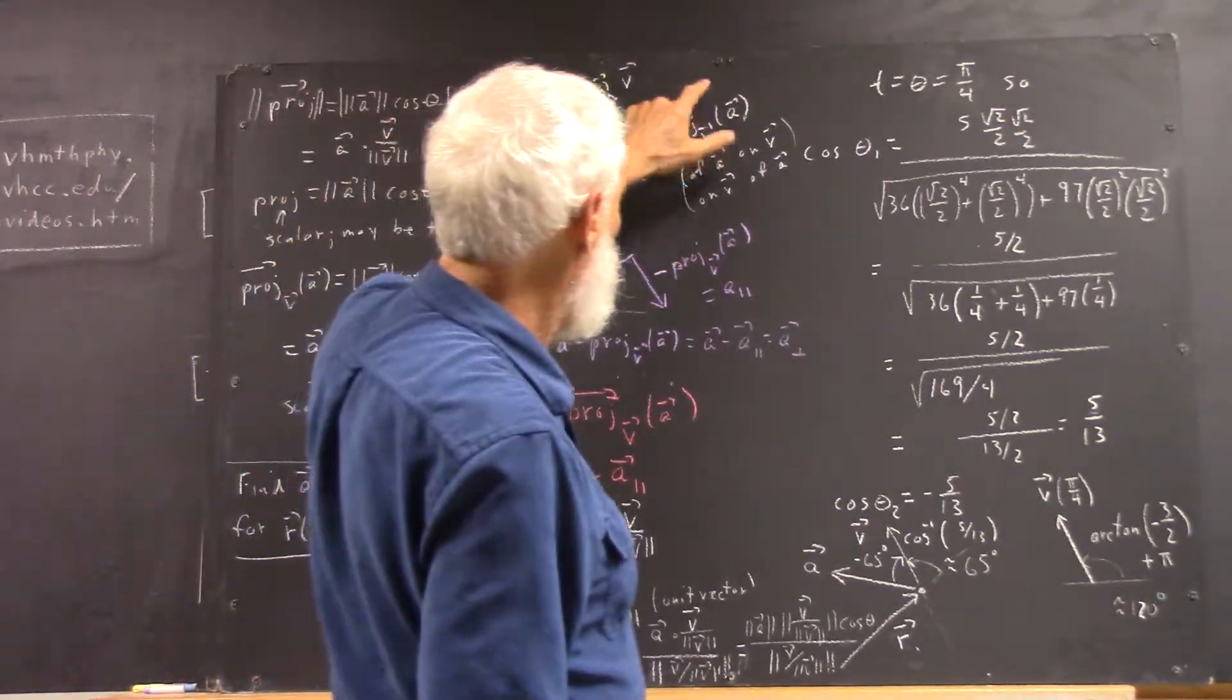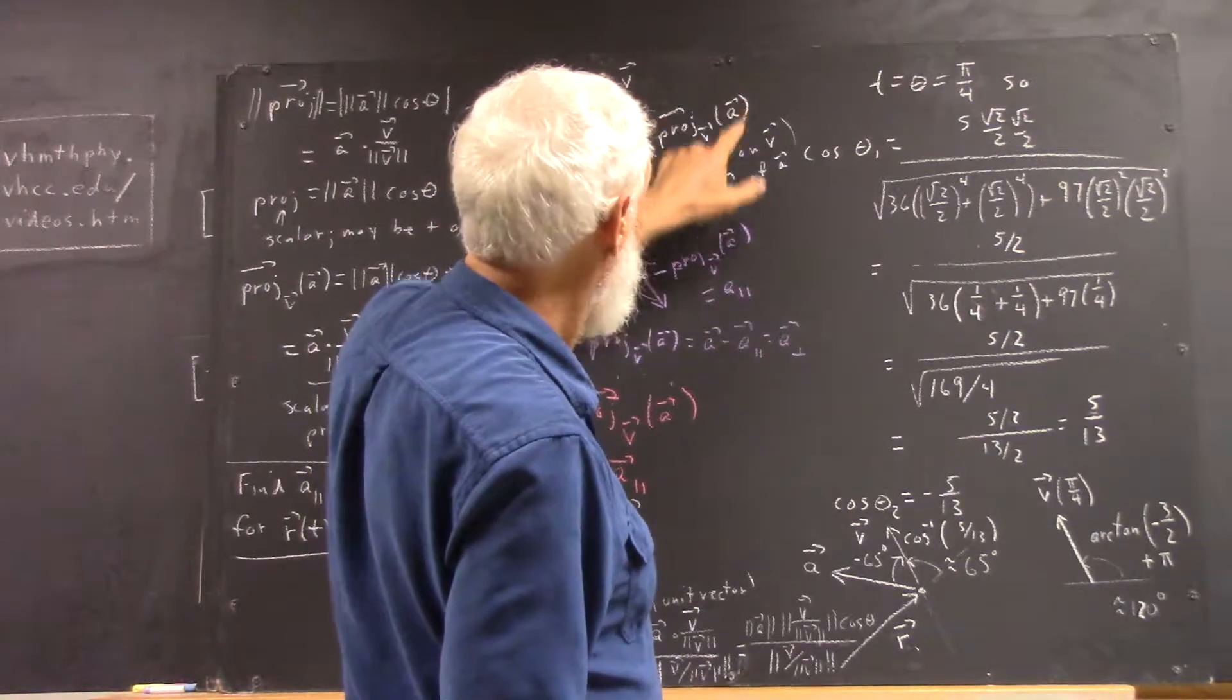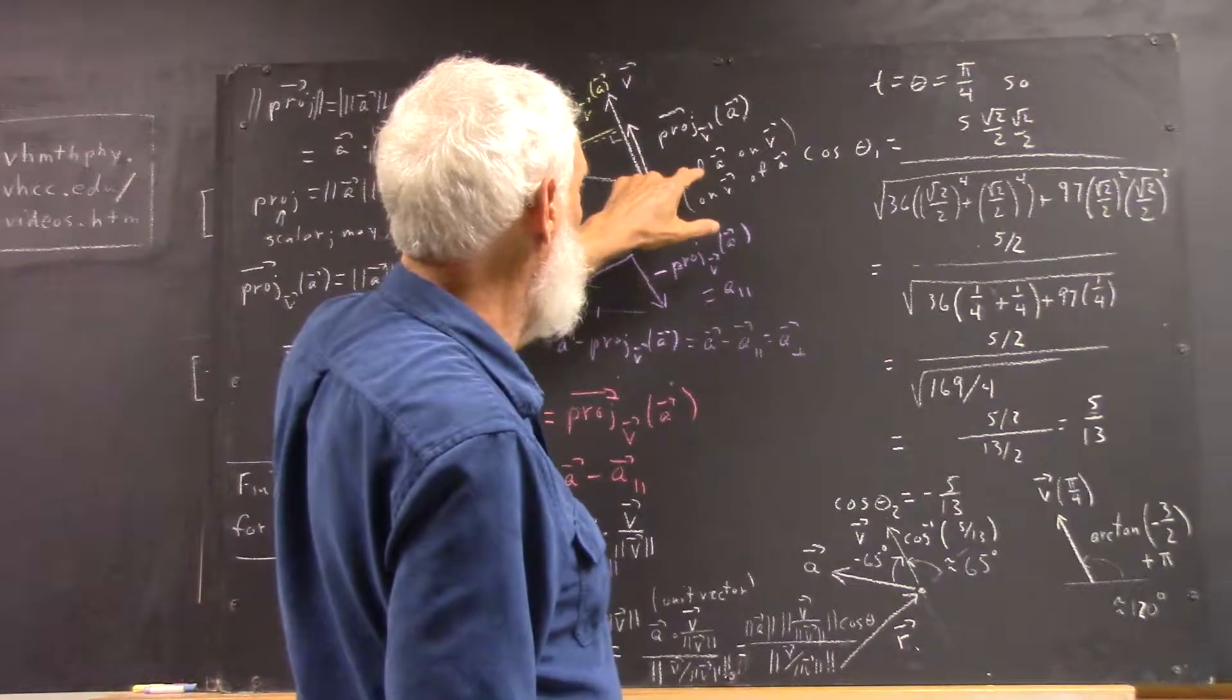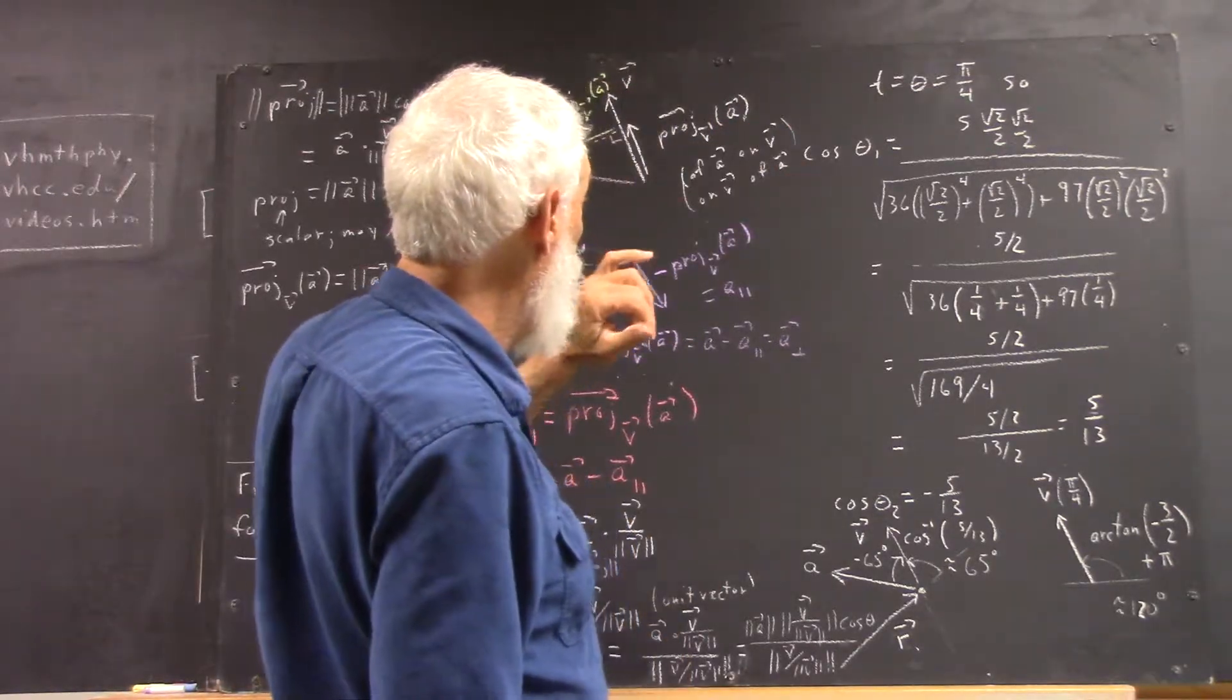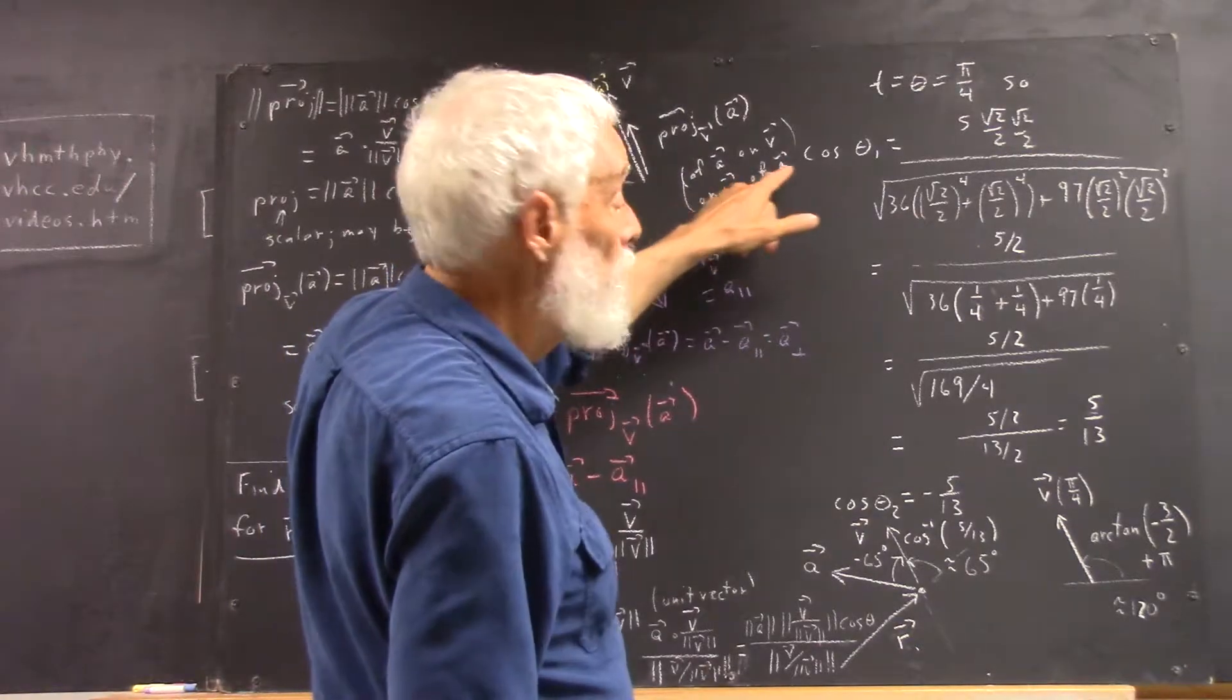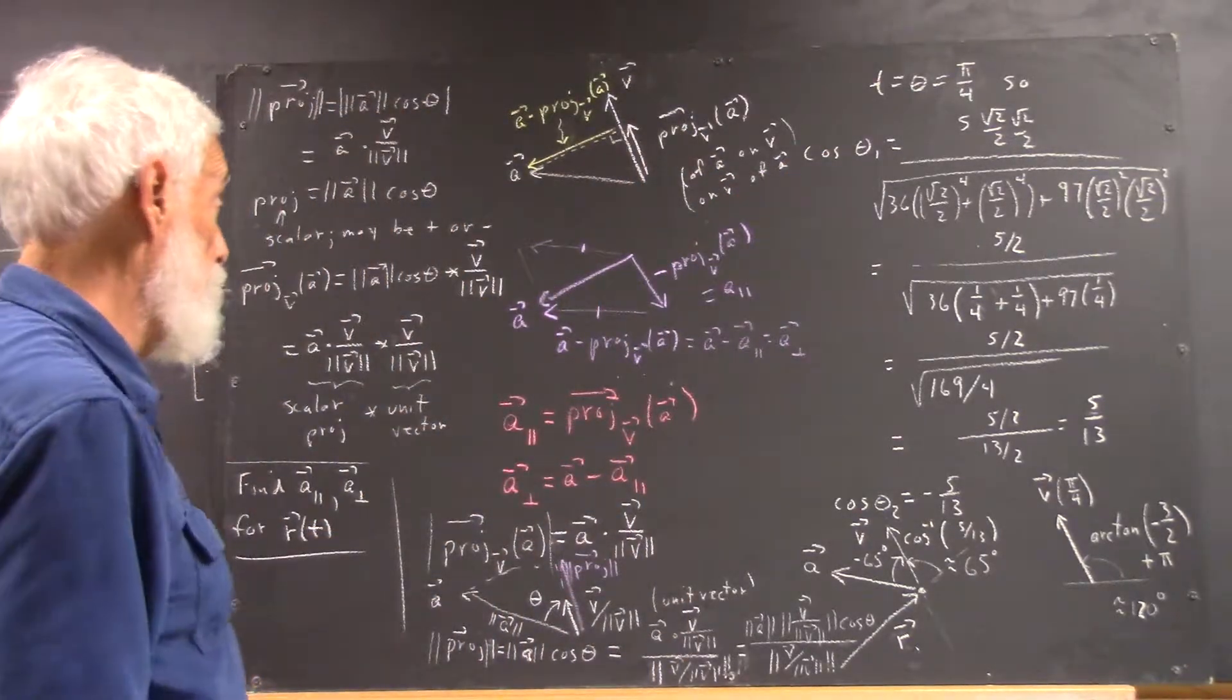And that's a projection of the argument, which is in parentheses. It's a projection of A. The V is down here to show what you're projecting on. So, it's a projection of A on V, or you could say it's a projection on V of A. It means the same thing. As long as you have the on in front of the V and the of in front of the A, you've got it right.